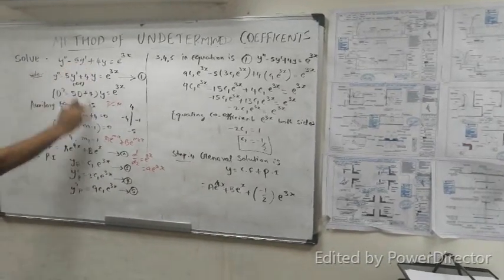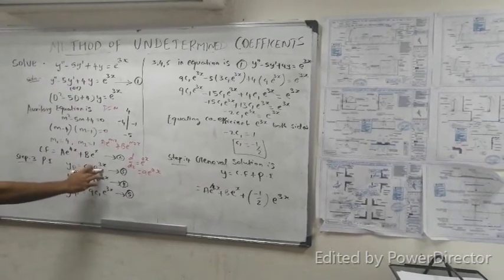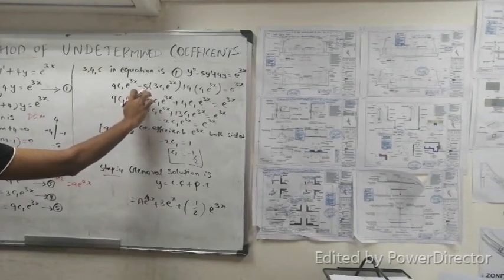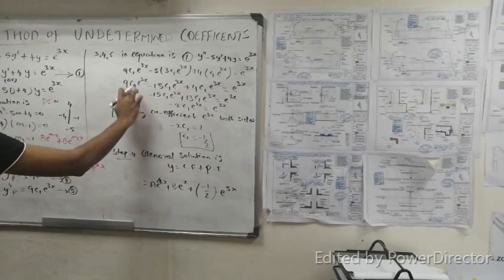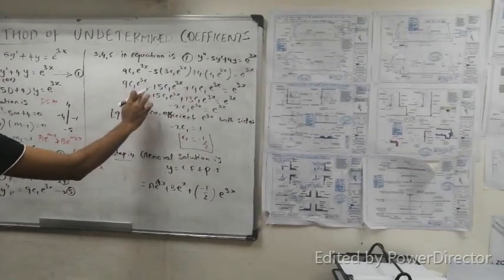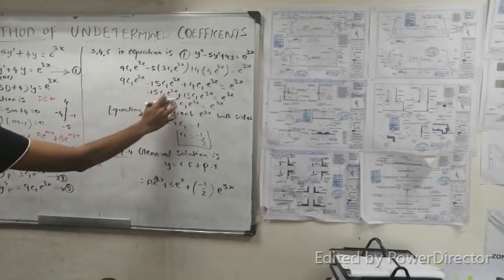This gives 9C1 e^(3x) - 5(3C1 e^(3x)) + 4(C1 e^(3x)) = 9C1 - 15C1 + 4C1. Simplifying: -2C1 e^(3x).